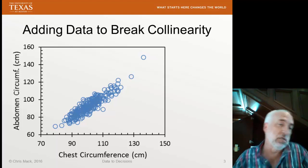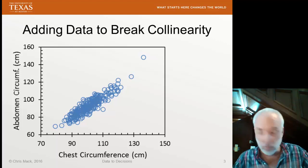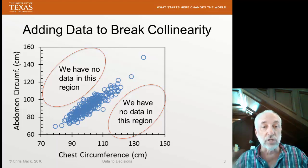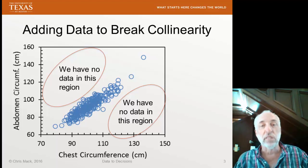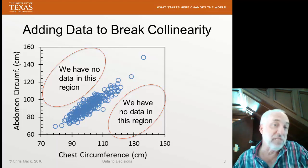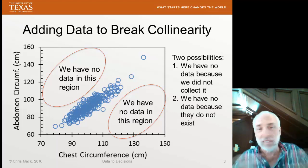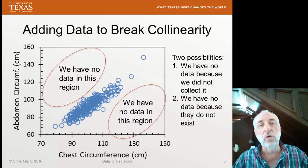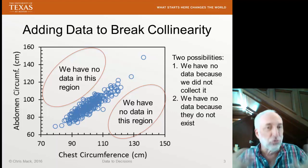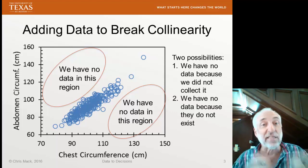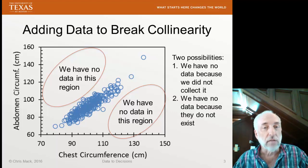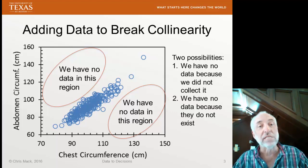First, adding data. Here's a set of data that shows highly correlated predictor variables — we've seen this data before. Notice that we don't have any data in certain regions of this space, and as a result, I see high correlation between these two measures. Now the question is: is there no data there because we simply failed to collect it, or is there no data there because data doesn't exist? In other words, is this an apparent high level of correlation between these two, or does the true nature of these two measurements dictate that there must be high levels of correlation?